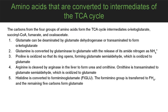The carbons from four groups of amino acids form TCA cycle intermediates: alpha-ketoglutarate, succinyl-CoA, fumarate, and oxaloacetate. Glutamate can be deaminated by glutamate dehydrogenase or transaminated to form alpha-ketoglutarate. Glutamine is converted by glutaminase to glutamate, releasing its amide nitrogen as ammonium. Proline is oxidized so that its ring opens, forming glutamate semialdehyde, which is oxidized to glutamate. Arginine is cleaved by arginase in the liver to form urea and ornithine; ornithine is transaminated to glutamate semialdehyde, which is oxidized to glutamate.